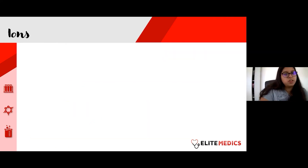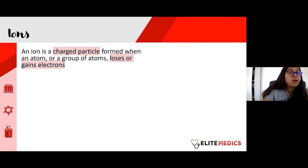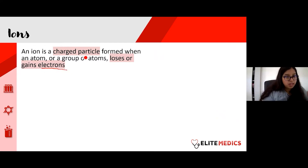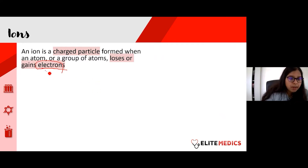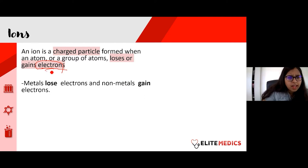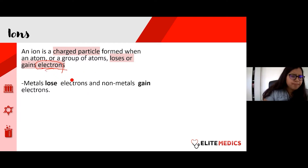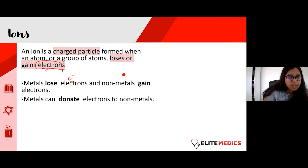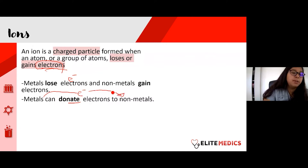Now we're going to come on to ions. An ion is a charged particle formed when an atom or group of atoms loses or gains electrons. Importantly, ions only lose or gain electrons — the neutrons and protons stay the same. In the periodic table, metals can lose electrons and non-metals gain electrons. A more scientific term for losing is 'donating', so metal ions can donate their electrons to non-metals.